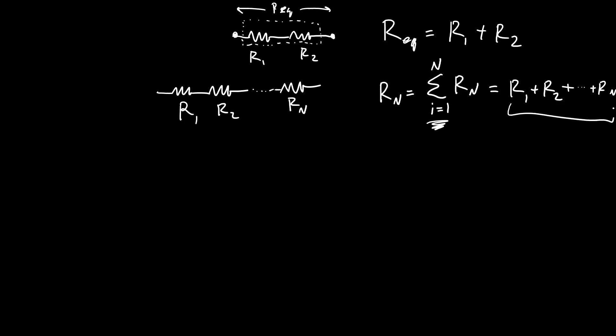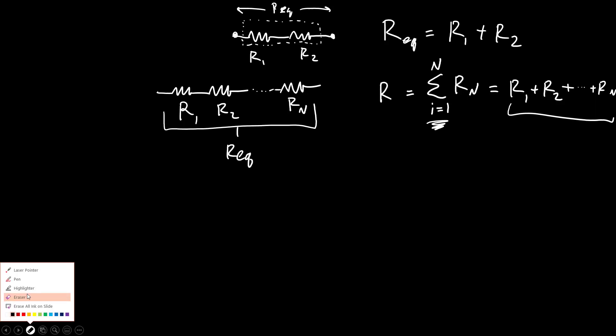So all it is is adding up all of the resistances to find the equivalent total resistance R_EQ. And I just realized, of course, this should be an R_EQ there and not an R_N, so there we go, R_EQ.